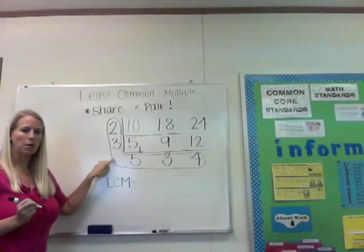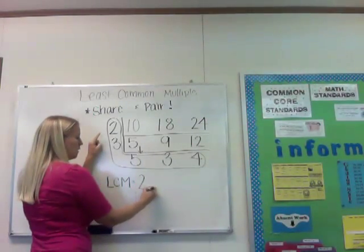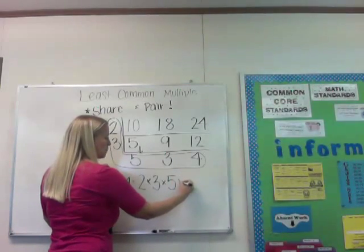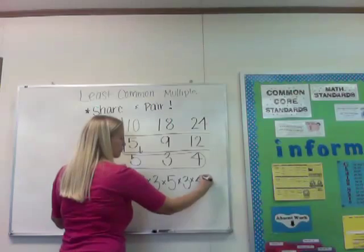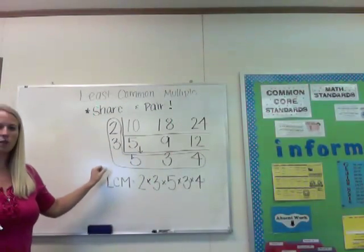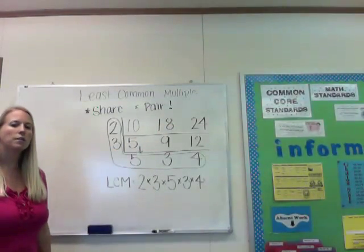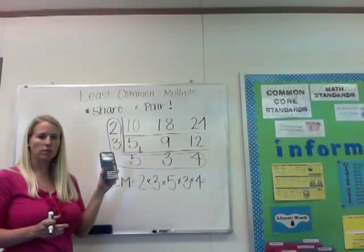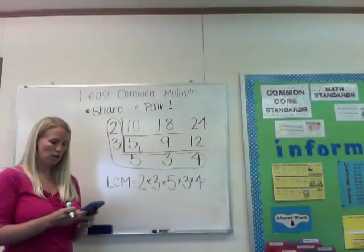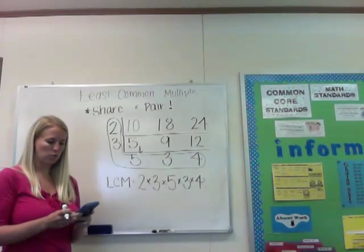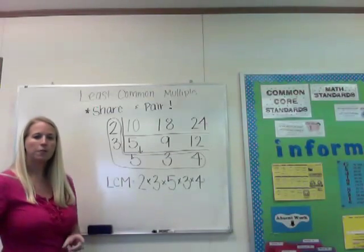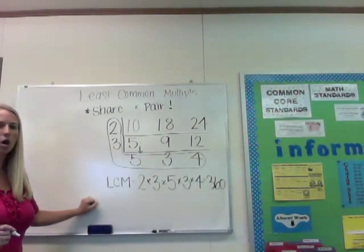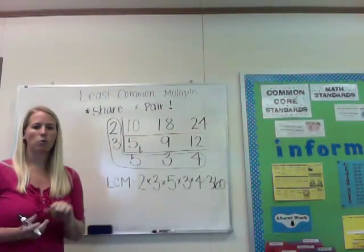Notice the L shape I create with my bubble. So I'm going to use 2 times 3 times 5 times 3 times 4. This will give me the least common multiple of the numbers 10, 18, and 24 — the smallest number that 10, 18, and 24 can go into. Use your calculators — that's why we have asked you to bring them all week. So 2 times 3 times 5 times 3 times 4. I got 360. 360 is the smallest number that 10, 18, and 24 will go into evenly.